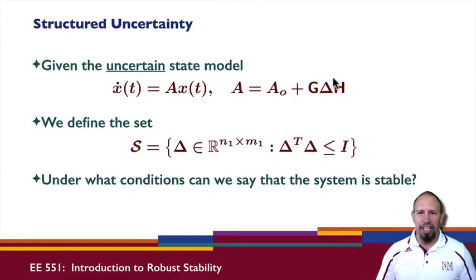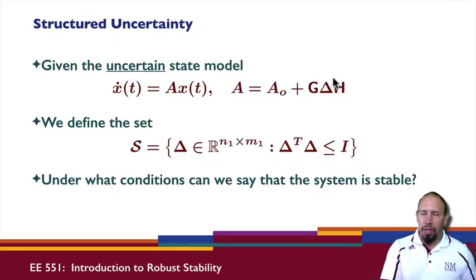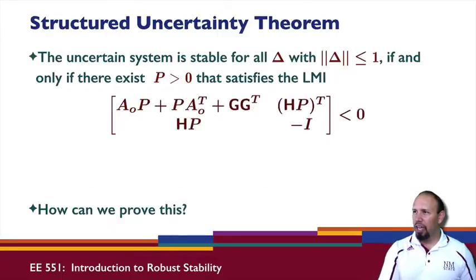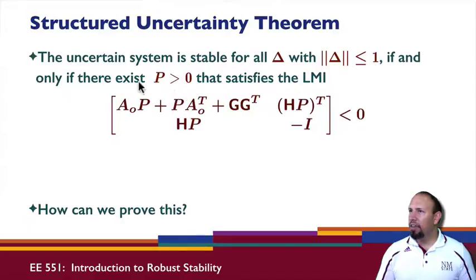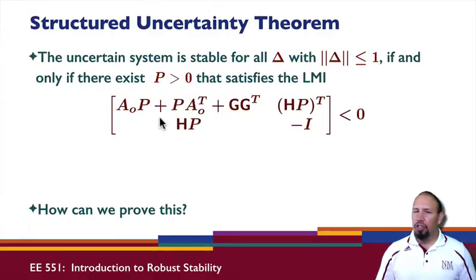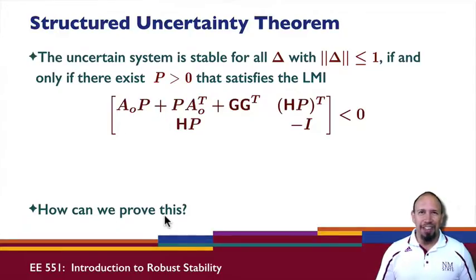How do we actually assess whether or not the system is stable? Lyapunov theory can be used to prove stability. It turns out the uncertain system is stable for all uncertainties with norm less than or equal to one if and only if there exists a positive definite P that satisfies a linear matrix inequality. I'll go through and prove this, but we'll save that for the proofs video.